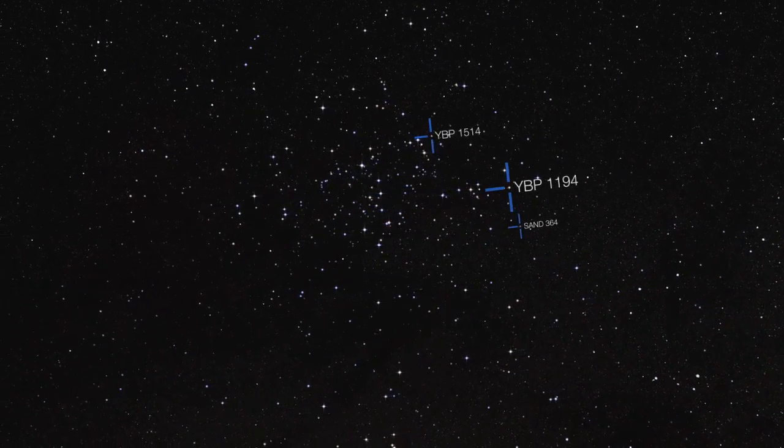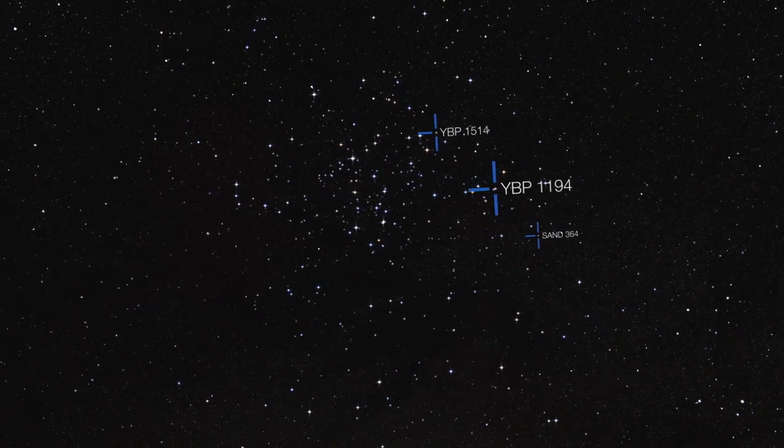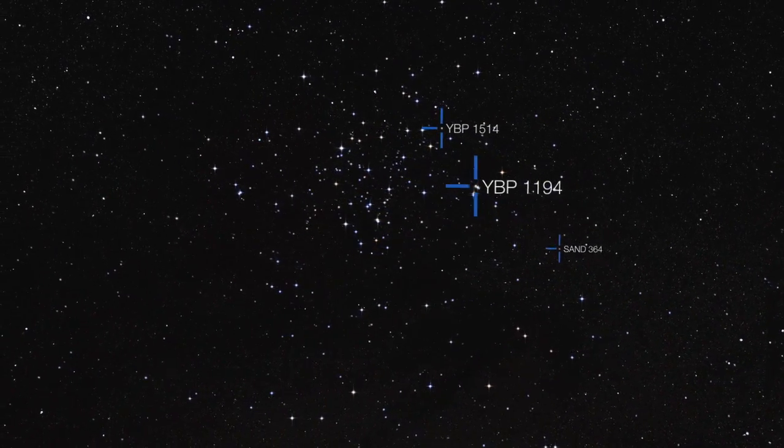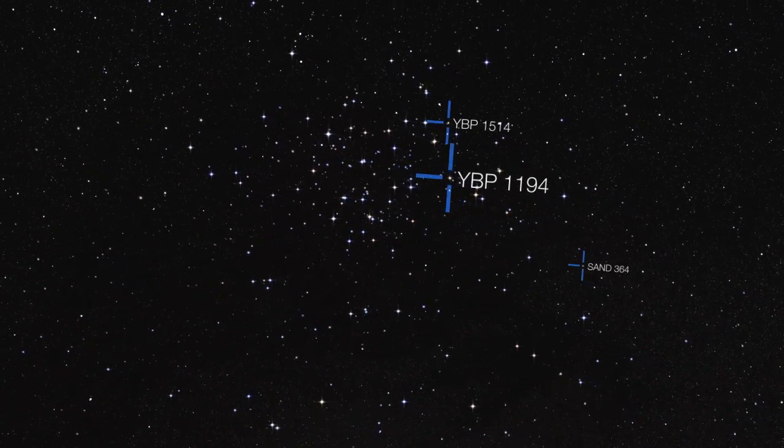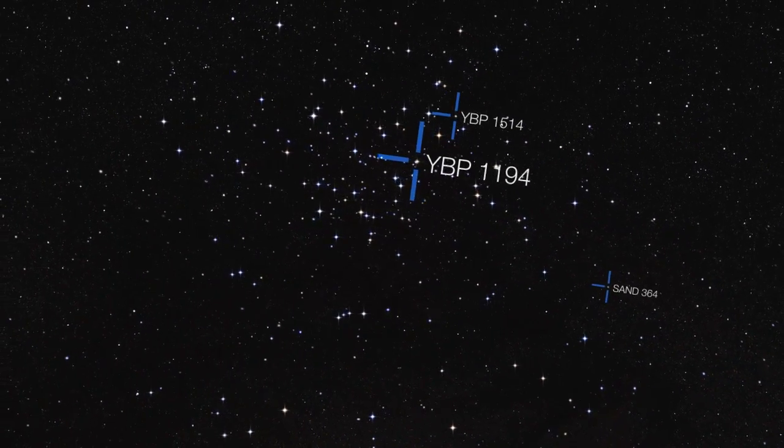Astronomers using ESO telescopes and others around the world have found three new planets orbiting stars in a cluster called Messier 67.